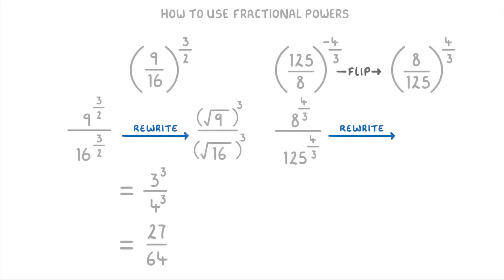We can rewrite that as the cube root of 8 to the power of 4 over the cube root of 125 to the power of 4. Because the cube root of 8 is 2 and the cube root of 125 is 5, we can simplify it to 2 to the power of 4 over 5 to the power of 4, which is 16 over 625.